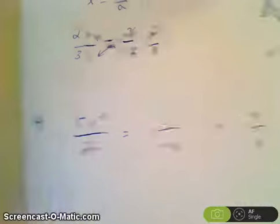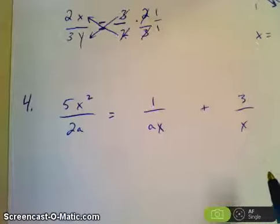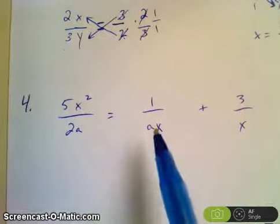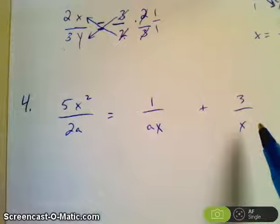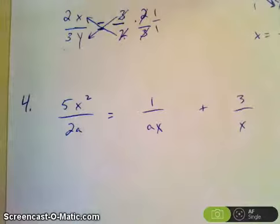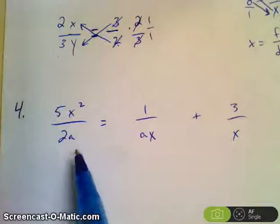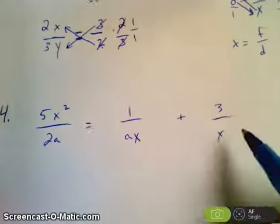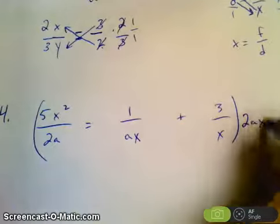Let's look at this example. So in this one, the first thing that we should do is get rid of the denominators. So what could we multiply by to get rid of all of the denominators to make it a little bit easier for us? Well, we look for the least common multiple of these three. So if I have 2a, ax, and x, my least common multiple of those is 2ax.